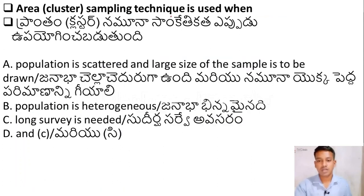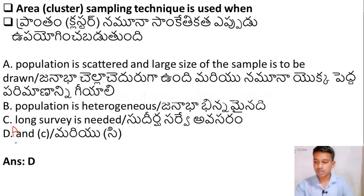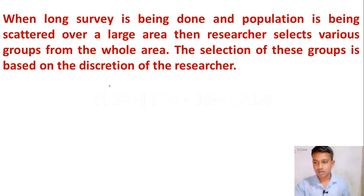The next question: area sampling or cluster sampling technique is used when — Option A: Population is scattered and a large size of the sample is to be drawn, Option B: Population is heterogeneous, Option C: Long surveys are needed, Option D: Both A and C. The right answer is Option D — Both A and C. Area or cluster sampling is used when the population is scattered over a large area and a large sample must be drawn, or when a long survey is being conducted.